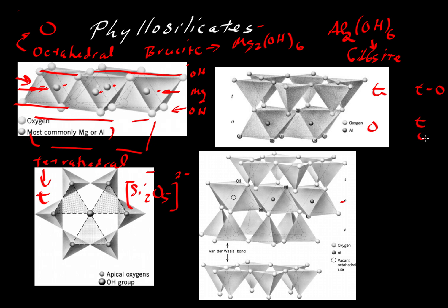Where the structure would be TO, and then another TO, and then another TO. And then each of these would be bonded together by van der Waals bonds.